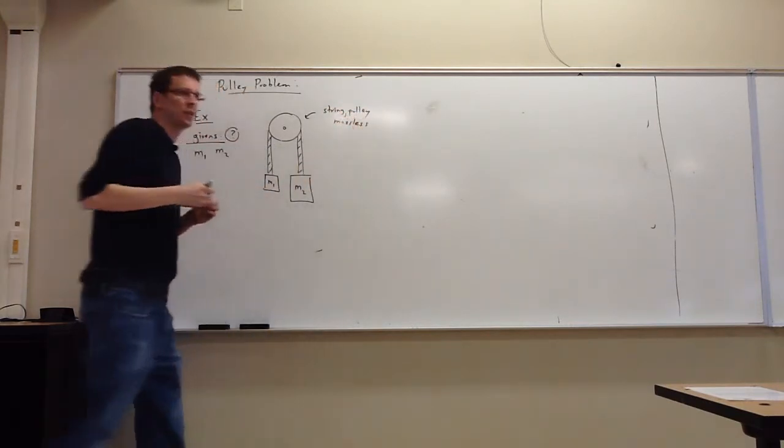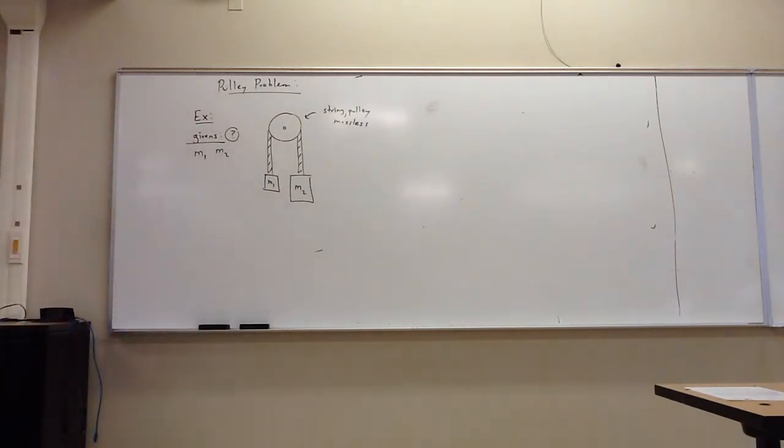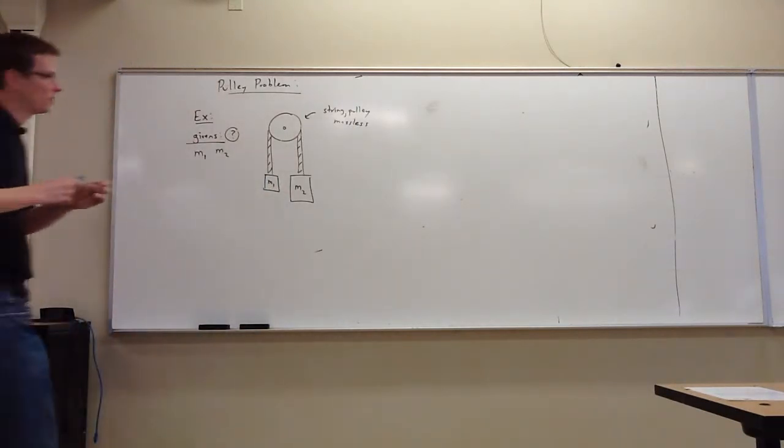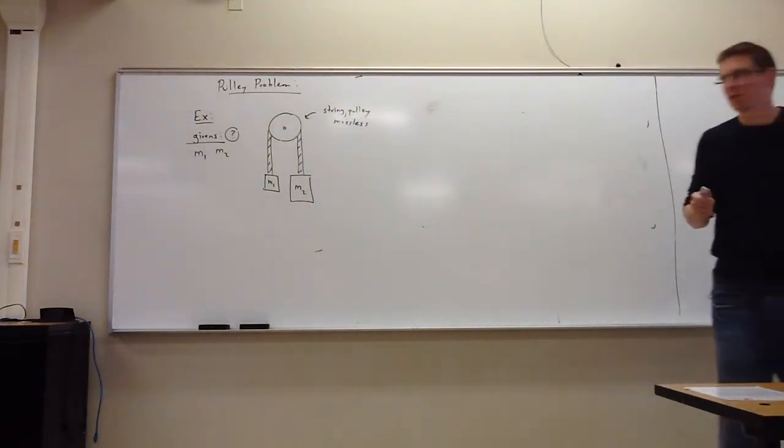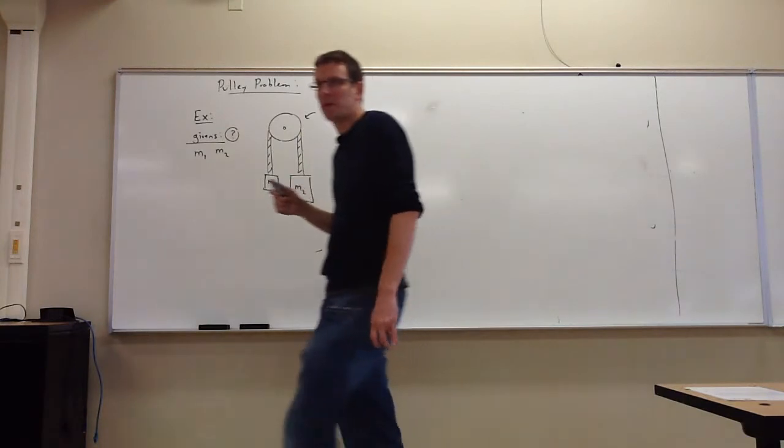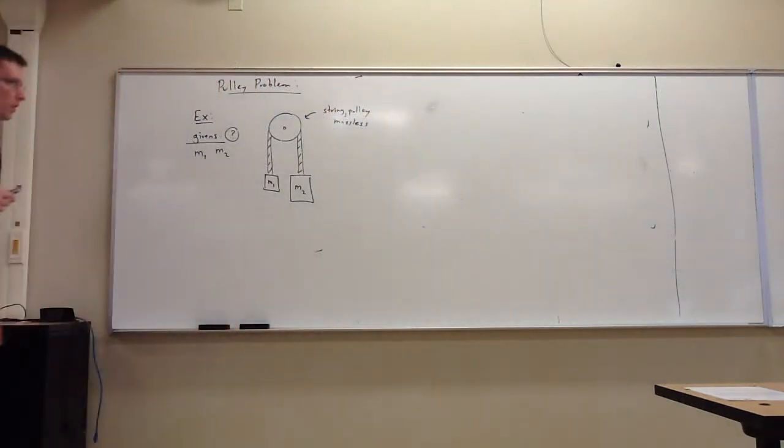The string and the pulley are both massless, so they don't have any inertia of their own. In fact, the only purpose that the pulley is going to serve is to redirect the rope. So it's a way of redirecting the rope up and over and connecting it to another mass.